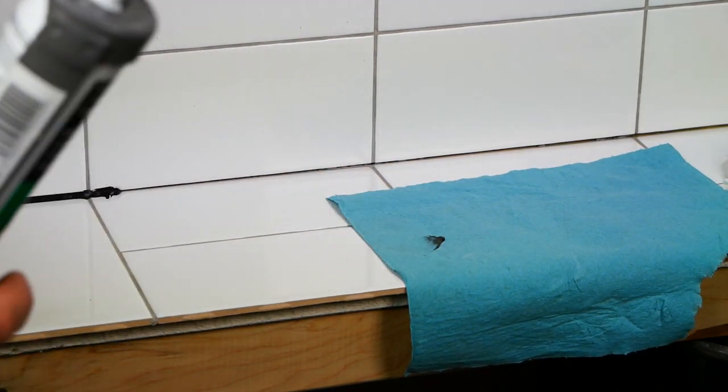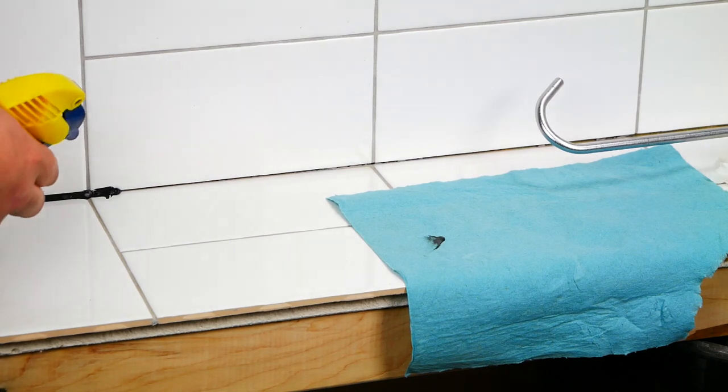I'm going to spray the caulk joint, and the paper towels are just to wipe the excess off.